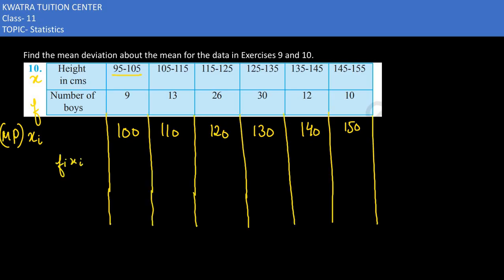Now fi times xi we need to find. So this would give you 900. 110 you multiply with 13, this would give you 1430. 120 into 26 gives you 3120. 130 into 30 is 3900. 140 times 12 gives you 1680. Last, 150 times 10 gives you 1500.